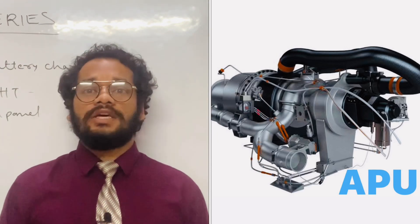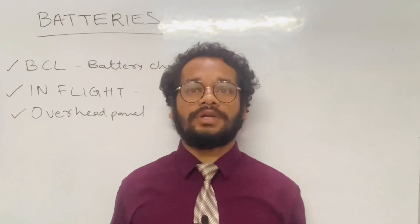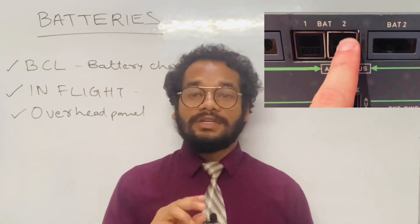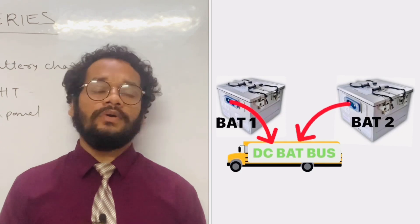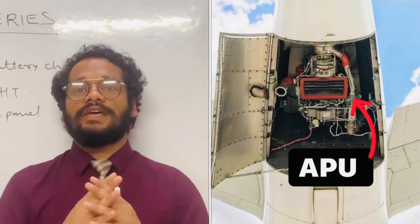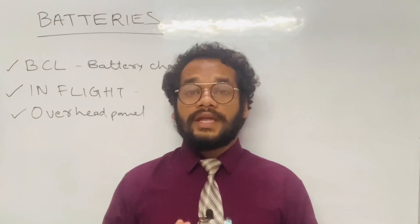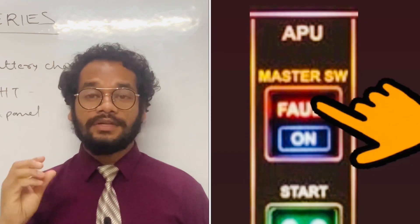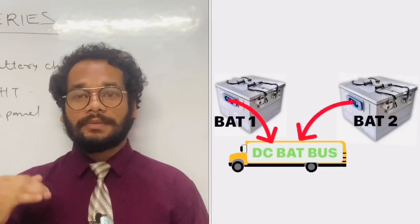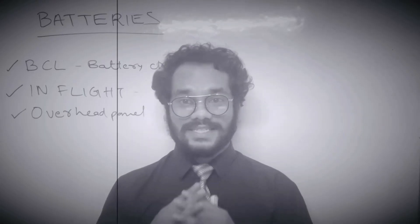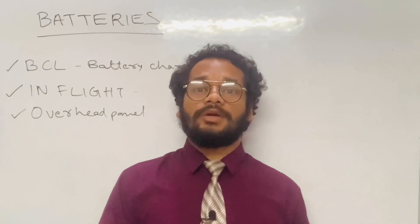For starting the APU, we need electrical power. On the ground, we turn on the batteries so that battery power goes to the DC BAT bus, which then supplies the APU starter. In flight during an electrical emergency, if the APU master switch is set to ON, the battery contactors automatically close to connect the batteries to the DC BAT bus, and remain closed for a maximum of three minutes.